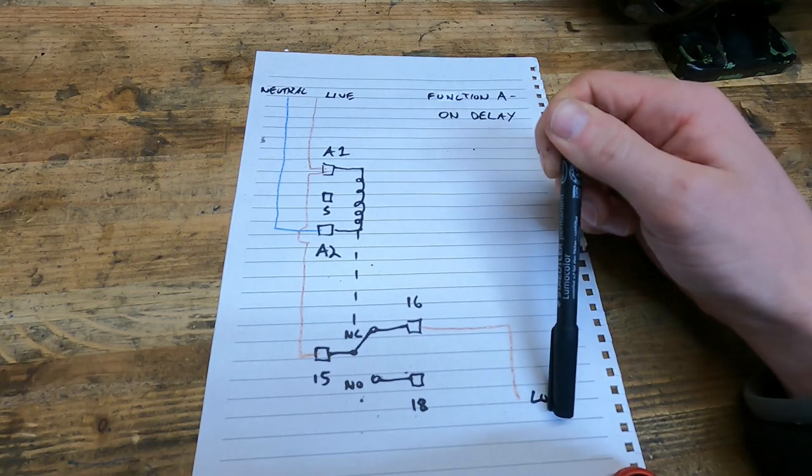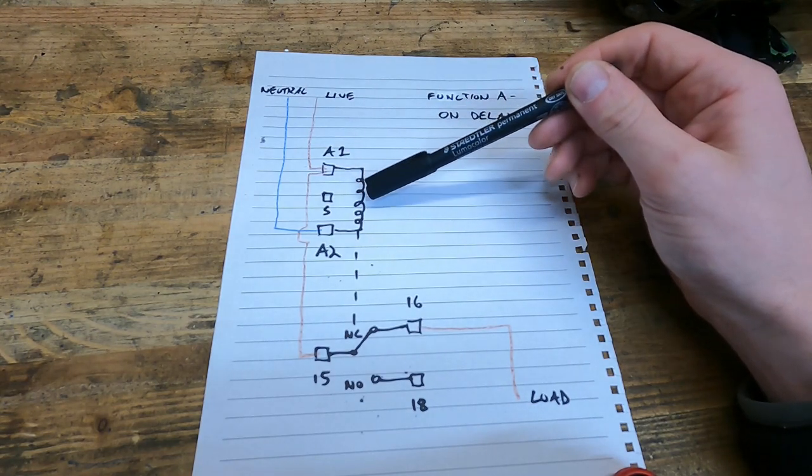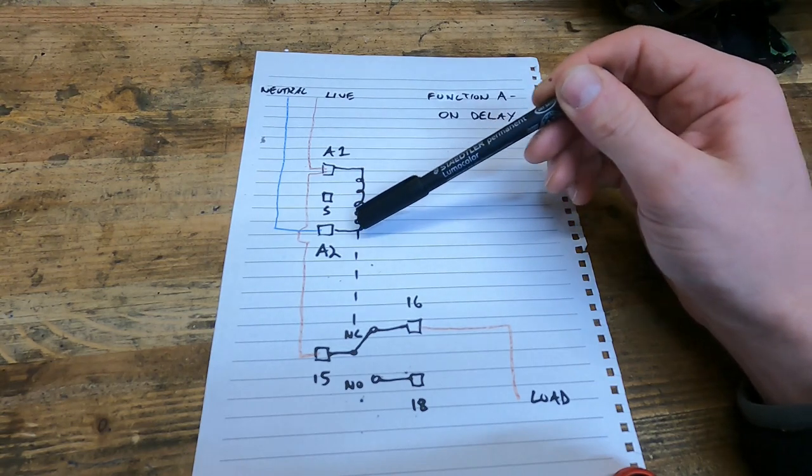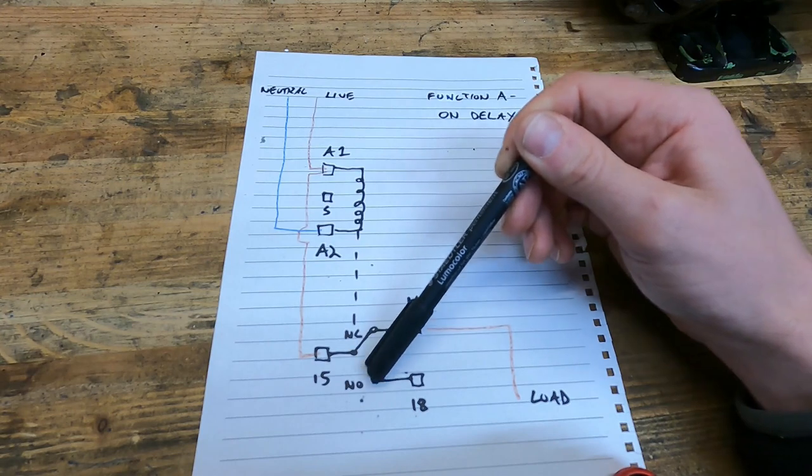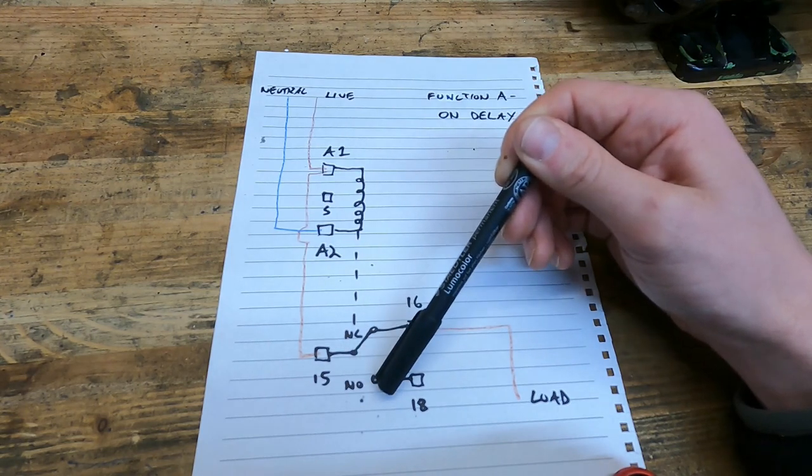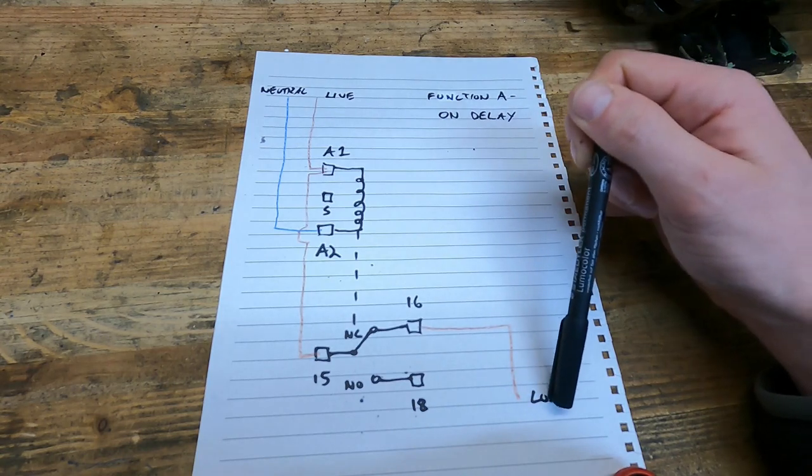We're going to be using terminal 16. So when power is applied to A1 and A2, power will also go through terminal 16 to the load. But then after the time period that we specify—and it's adjustable—the relay will actuate and this normally closed switch will become open and this normally open switch will become closed. So after that time period, no supply will go to the load.